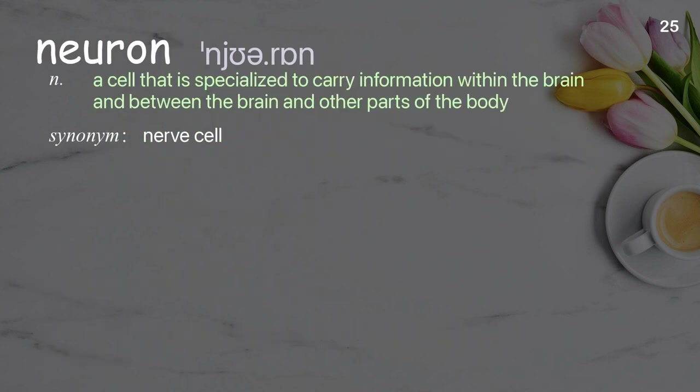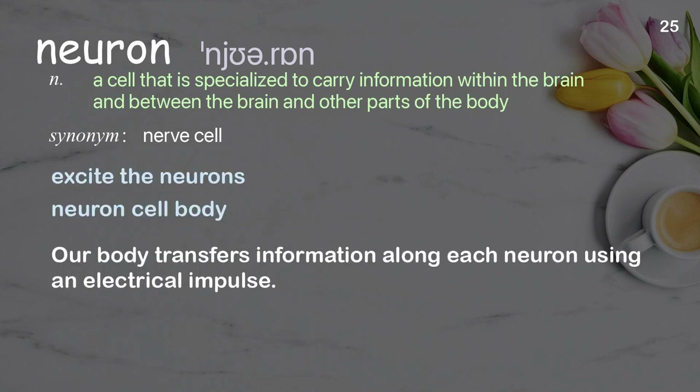Neuron: a cell that is specialized to carry information within the brain and between the brain and other parts of the body. Examples: Excite the neurons. Neuron cell body. Our body transfers information along each neuron using an electrical impulse.